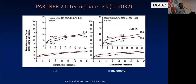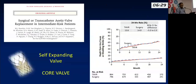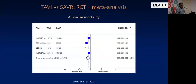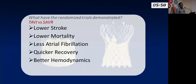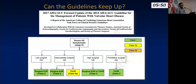With Partner 2 as well as the CoreValve trial for intermediate risk, TAVI performs either equal to or better than surgical valves. A recent meta-analysis confirms TAVI is superior to surgery in terms of all-cause mortality. Summarizing the evidence: TAVI has lower mortality, fewer arrhythmias, quicker recovery, better hemodynamics, and — importantly for some patients — no surgical scar. Surgery remains a Class I indication except for prohibitive-risk patients, while TAVI is now Class I for high risk and Class IIa for intermediate surgical risk.